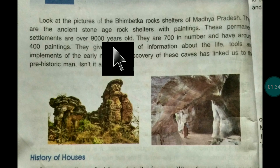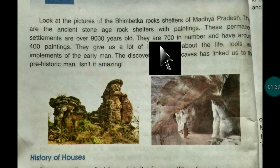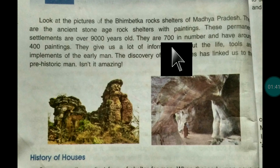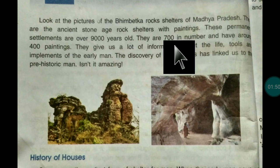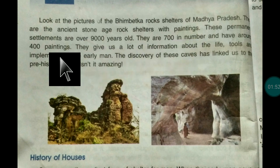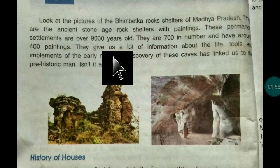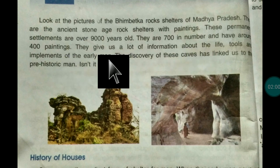The settlements are around 9,000 years old. They are 700 in number — there are 700 settlements — and they have around 400 paintings carved very nicely on the walls.